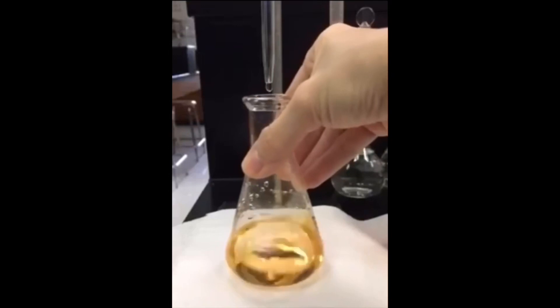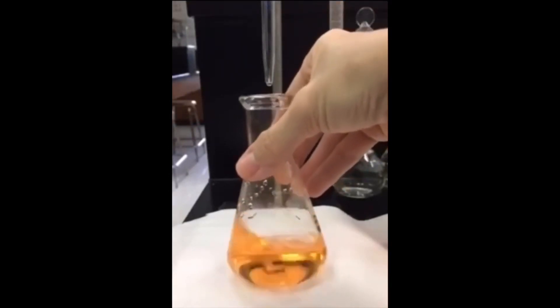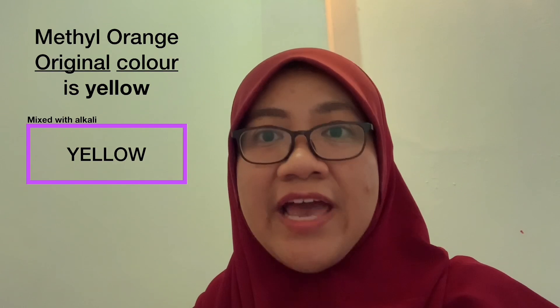The next indicator is methyl orange. Methyl orange is used for acid titration — a process to measure the amount of acid needed to neutralize an alkaline substance. These terms, titration and neutralization, will be discussed further in the next video under the topic of neutralization. The original color of methyl orange is yellow. When tested on an alkaline, it stays yellow. But when tested on acid, it turns red.